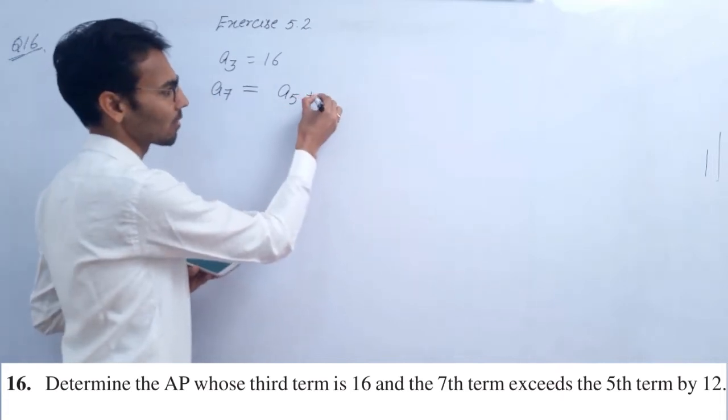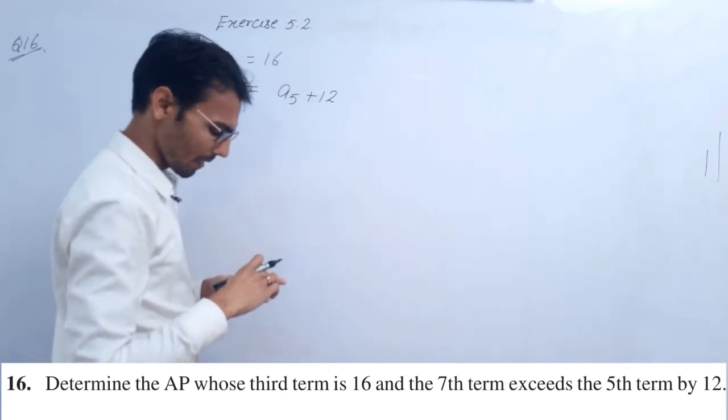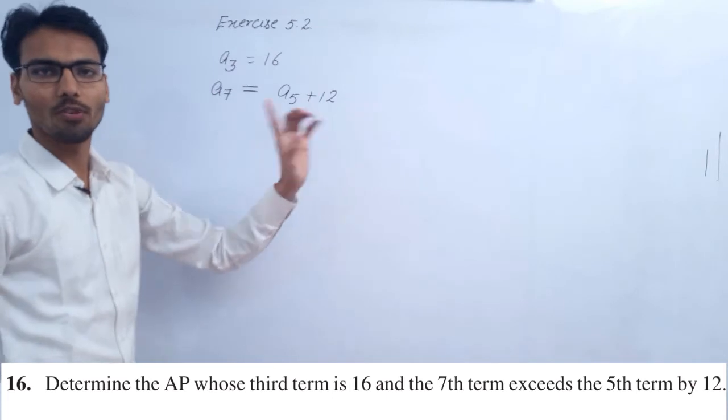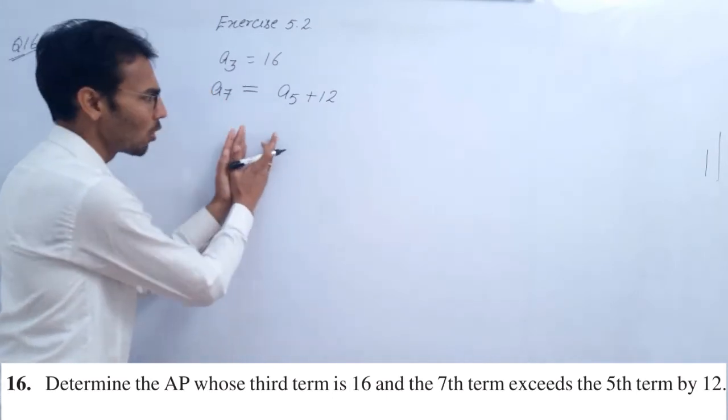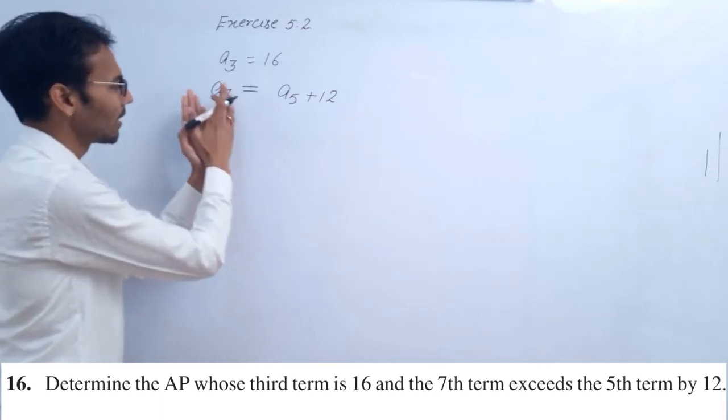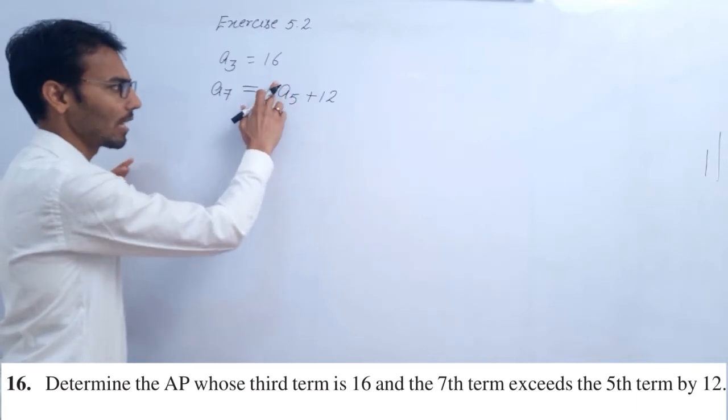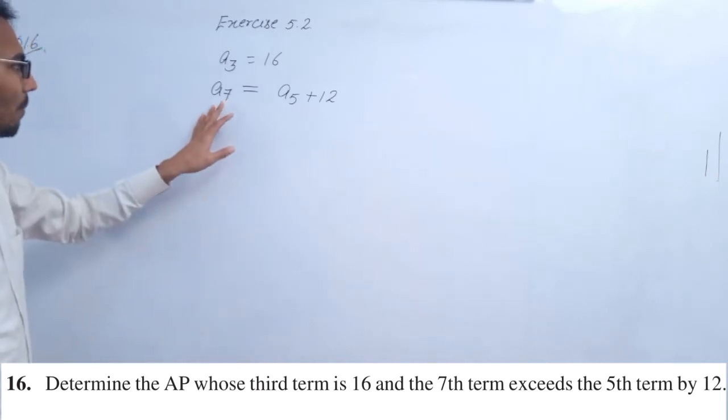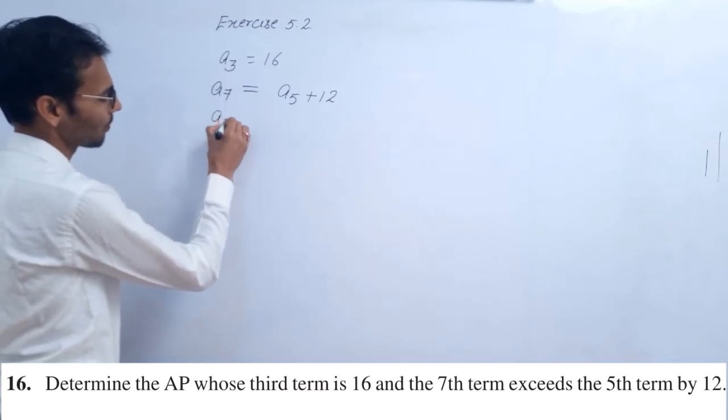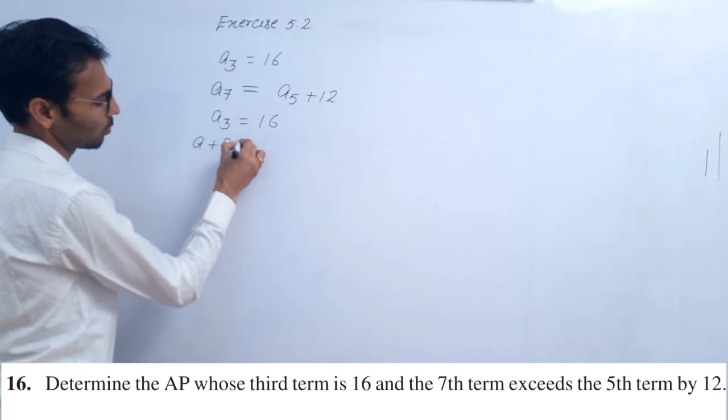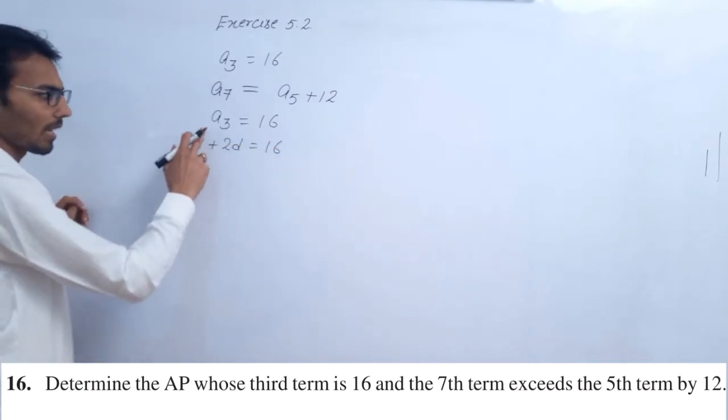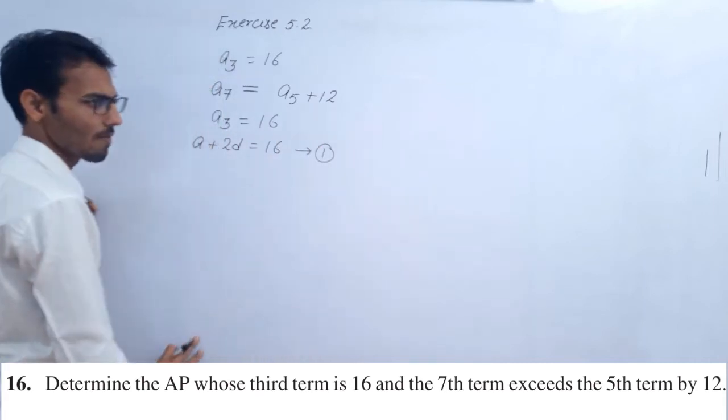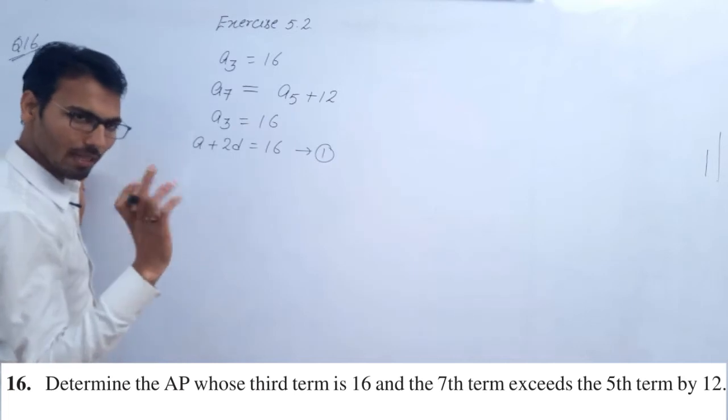So I have to do this: the first one is a₃ is 16, which means a plus 2d is equal to 16. This is your question number first equation. Two terms are given.